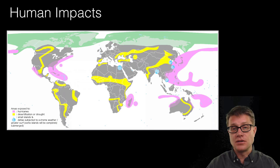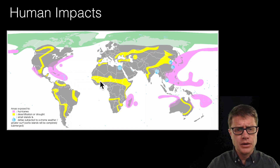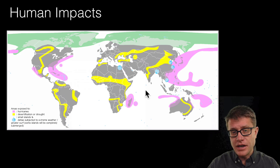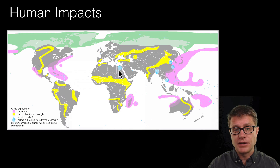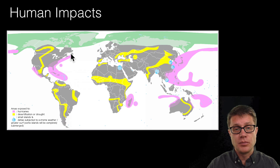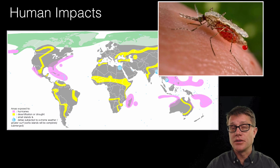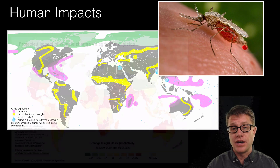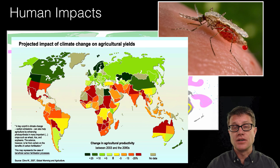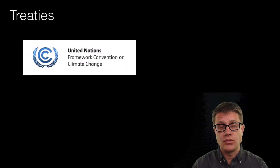Looking at the human impacts map, all the islands will obviously be impacted as sea levels start to rise, especially those living around river deltas. The purple areas indicate hurricane impacts, the yellow areas indicate droughts, and we are also going to see changes in disease — malaria is going to start to move to areas where it was never found before. Those droughts are going to lead to decreases in agricultural yields, which will further impact humans.